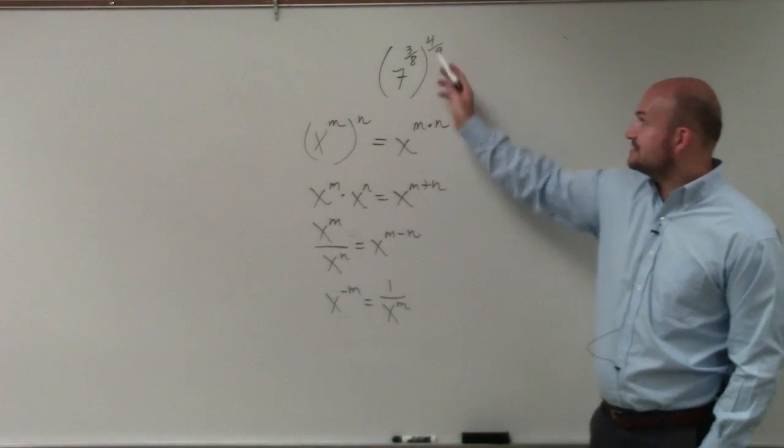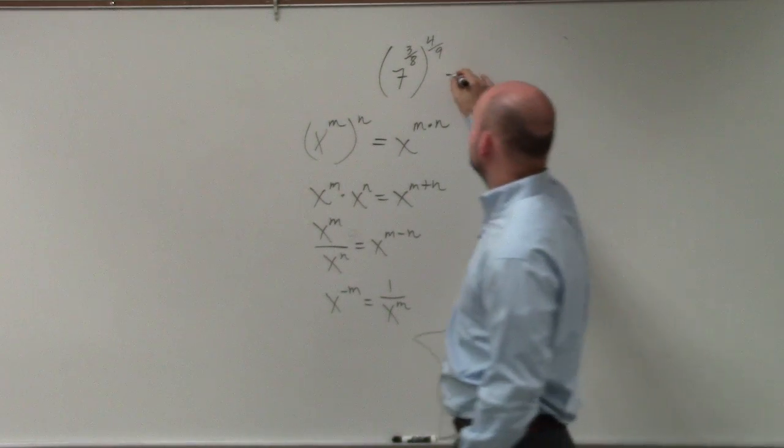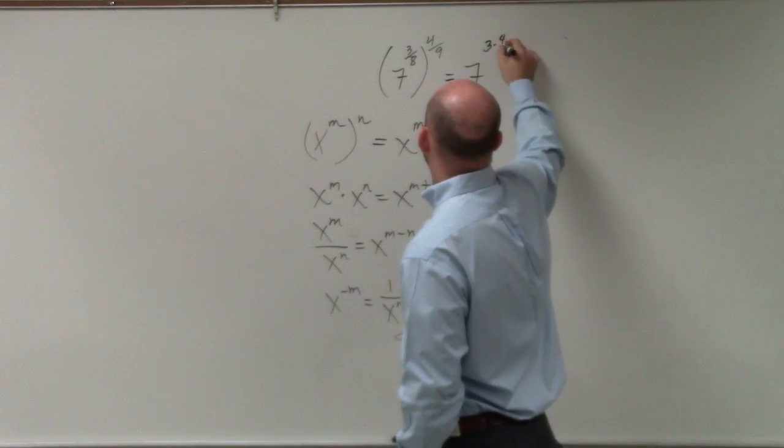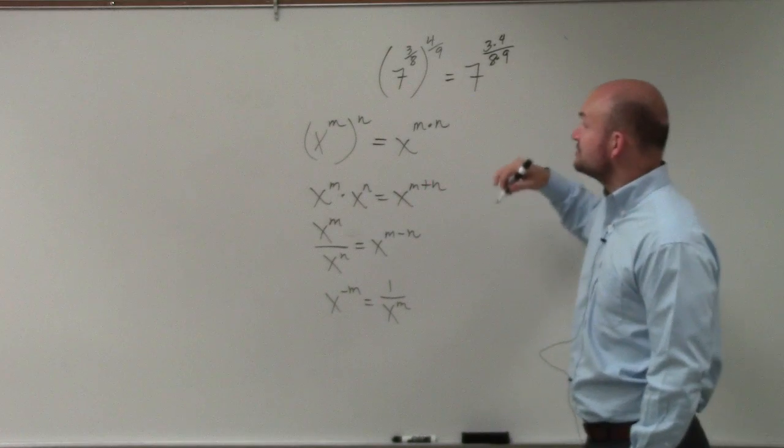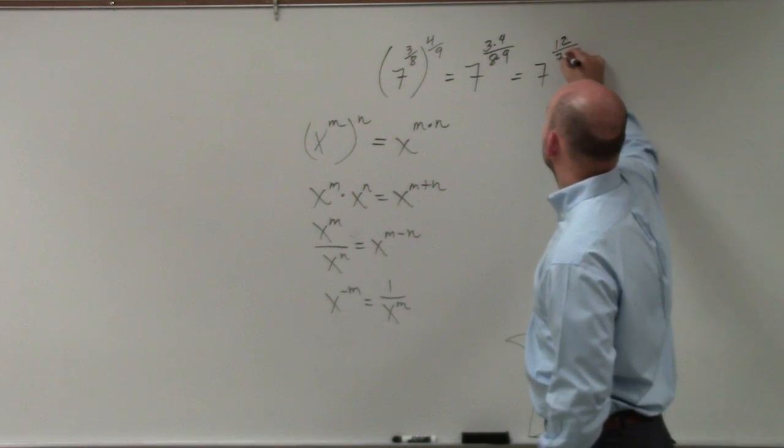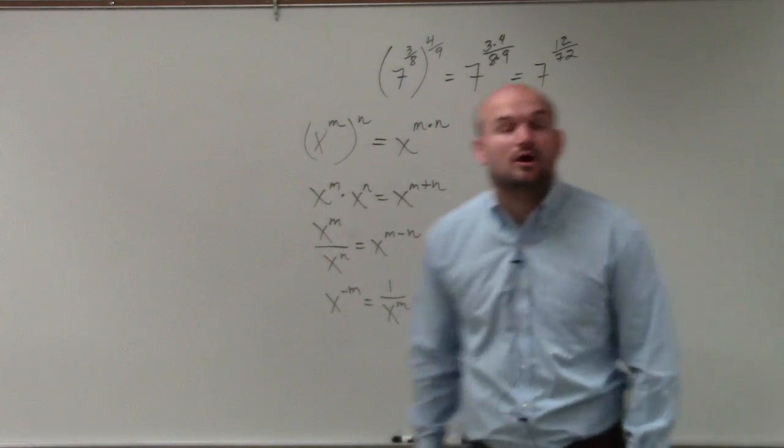So obviously, you can see that we have an exponent being raised to another power. So therefore, that's going to be the product of our two fractions, which when we're multiplying fractions, we multiply numerator times numerator, denominator times denominator.